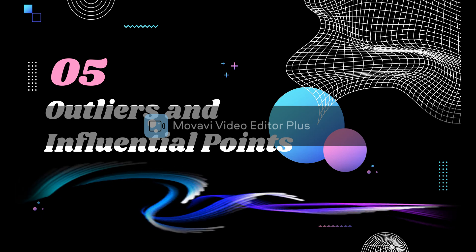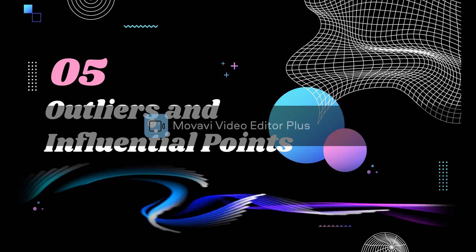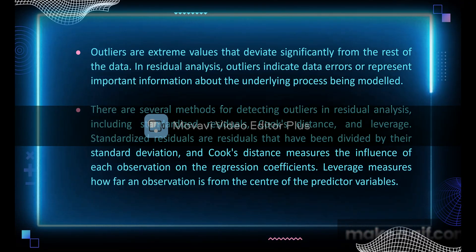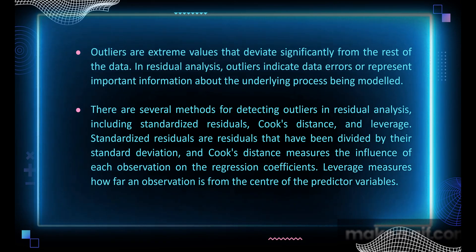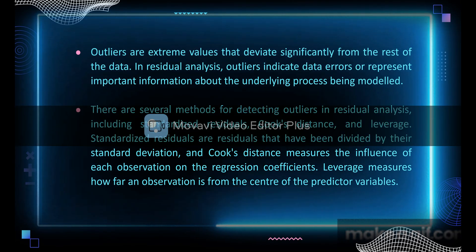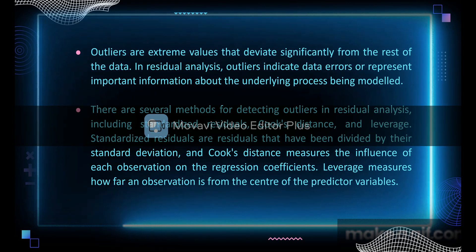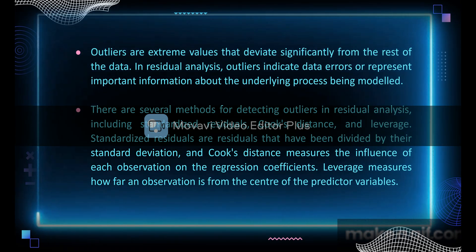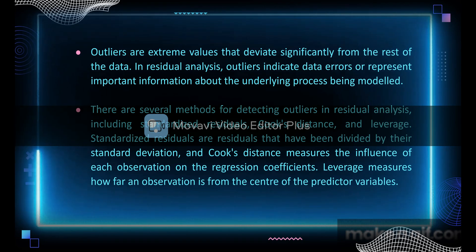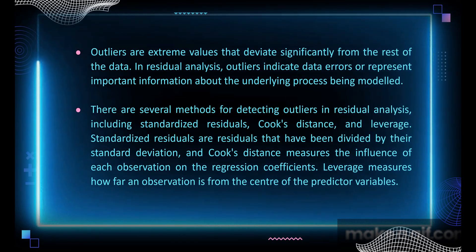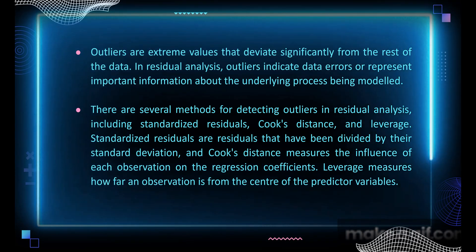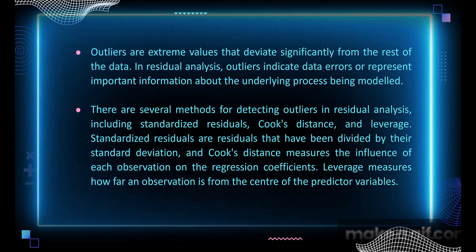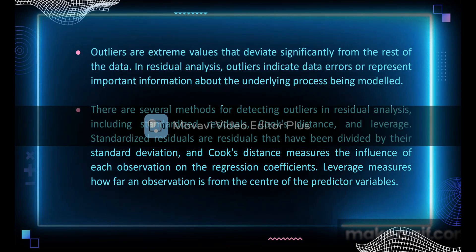Outliers and influential points — outliers are extreme values that deviate significantly from the rest of the data. In residual analysis, outliers may indicate data errors or represent important information about the underlying process being modeled. There are several methods for detecting outliers in residual analysis, including standardized residuals, Cook's Distance, and leverage. Standardized residuals are residuals that have been divided by their standard deviation. Cook's Distance measures the influence of each observation on the regression coefficients. Leverage measures how far an observation is from the center of the predictor variables.